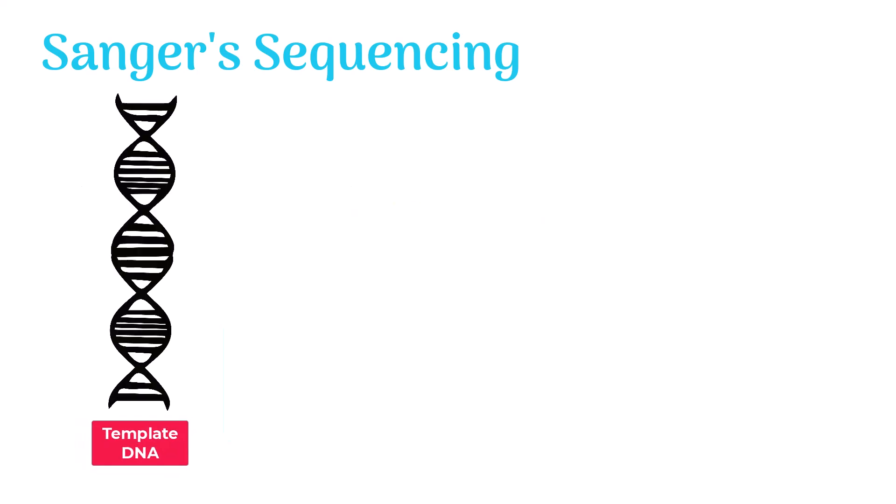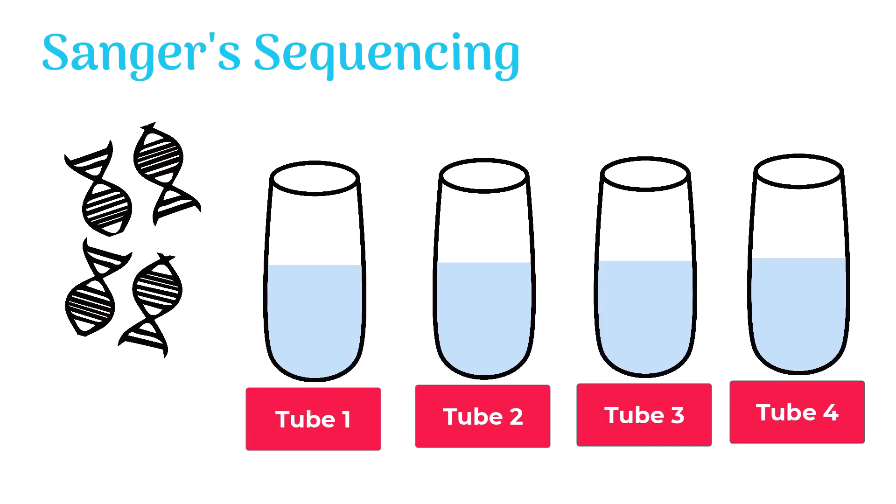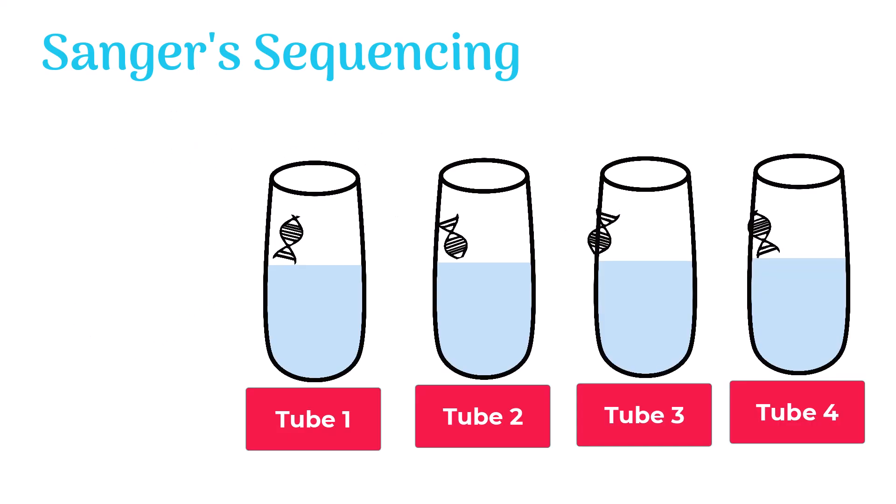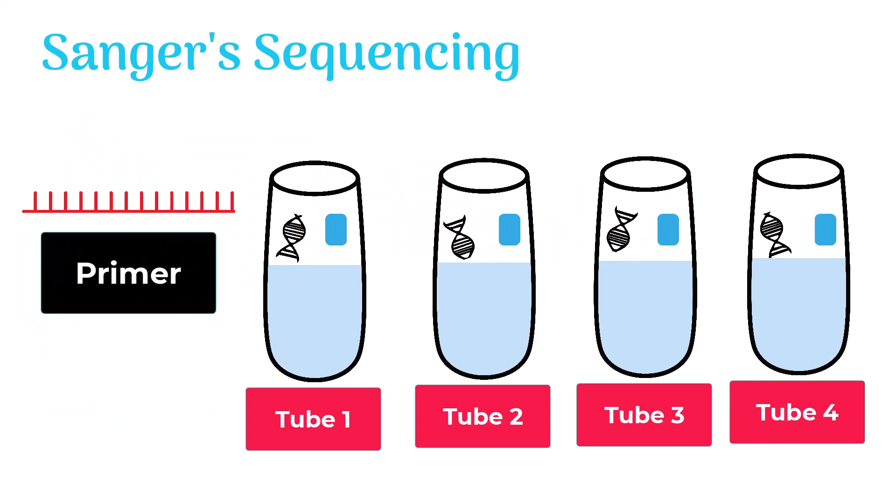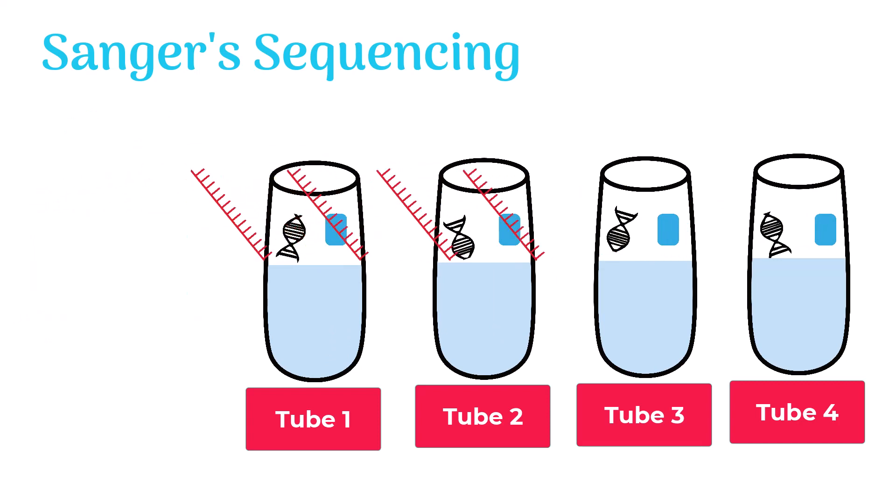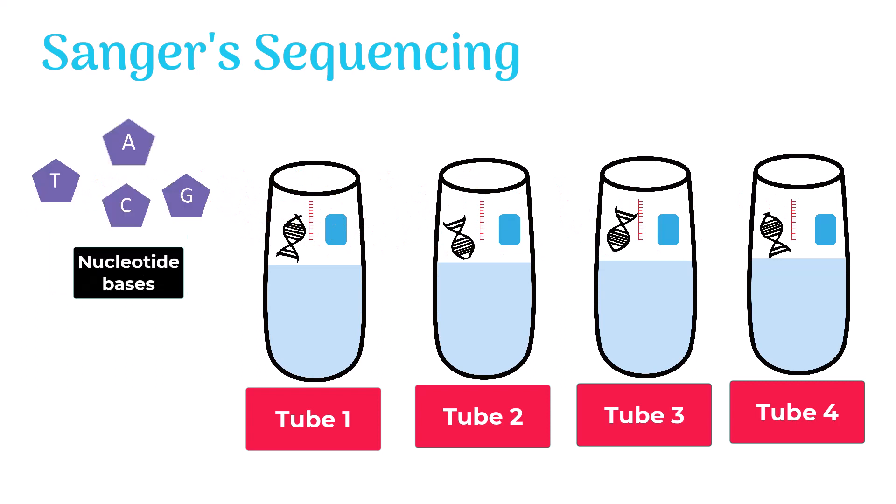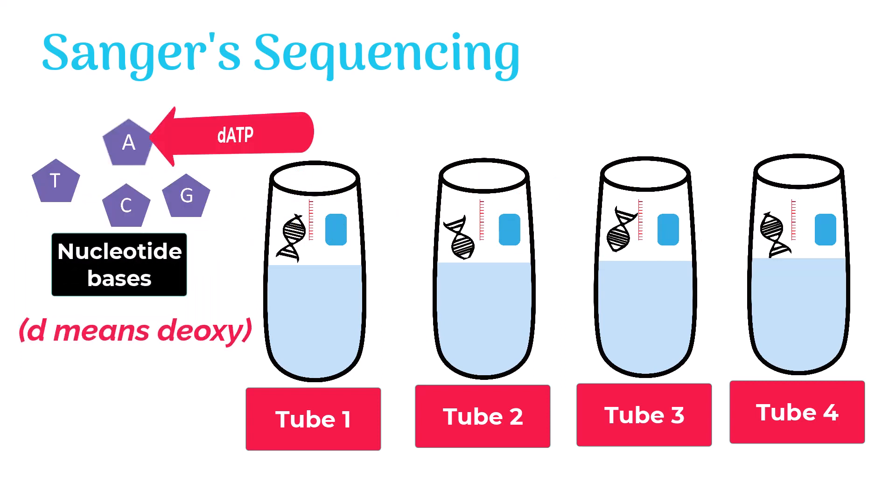The template DNA to be sequenced is first fragmented and added into four different tubes. The other major requirements of Sanger sequencing are DNA polymerase, primer which acts as the starting point of nucleotide polymerization, and four nucleotide bases: dATP, dGTP, dCTP, and dTTP.